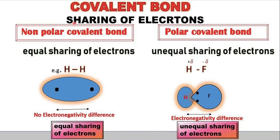There are two types of covalent bonding: non-polar covalent bond and polar covalent bond. Non-polar covalent bond is when electrons are shared equally — for example, hydrogen has no electronegativity difference. Polar covalent bond is when electrons are shared unequally — for example, hydrogen and fluorine. Fluorine has more electronegativity than hydrogen; therefore, the electron cloud tilts toward the fluorine atom rather than the hydrogen atom.